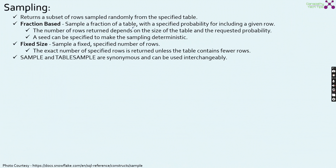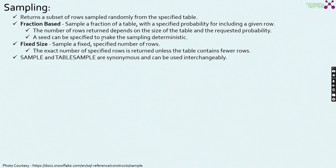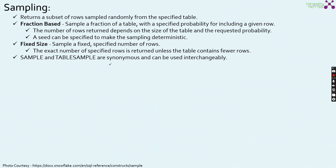Fraction-based sampling returns a sample of a fraction of the table with a specified probability for including a given row. The number of rows returned depends on the size of the table and the requested probability. A seed can be specified to make the sampling more deterministic. On the other hand, fixed size is where you specify the exact number of rows to be sampled from a specific table. The exact number of specified rows will be returned unless the table contains fewer rows. Importantly, SAMPLE and TABLESAMPLE are synonymous and can be used interchangeably.